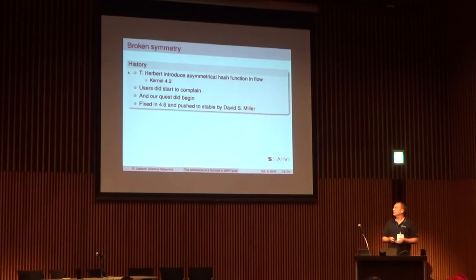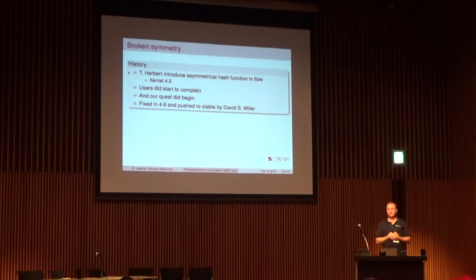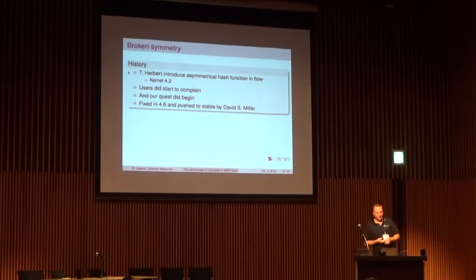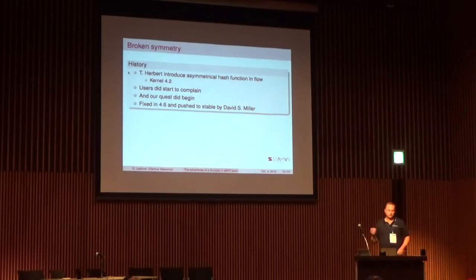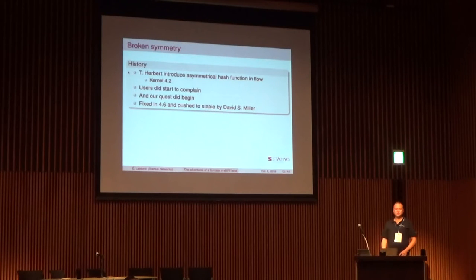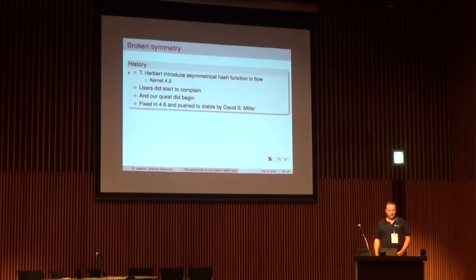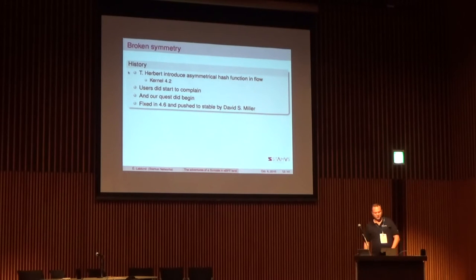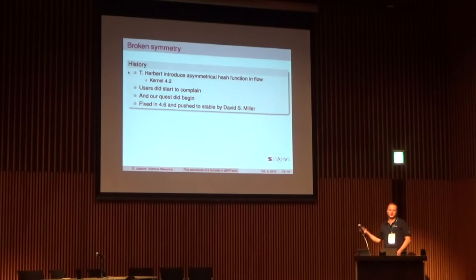This was working until kernel 4.2, because in 4.2 Tom Herbert introduced some new features in the flow that were breaking the hash function in the cluster flow mode of AF_PACKET, which allowed us to do load balancing on the software side. Users started to complain and looked a lot for a solution. The fastest solution was to talk with David, who provided a fix that was merged into stable.